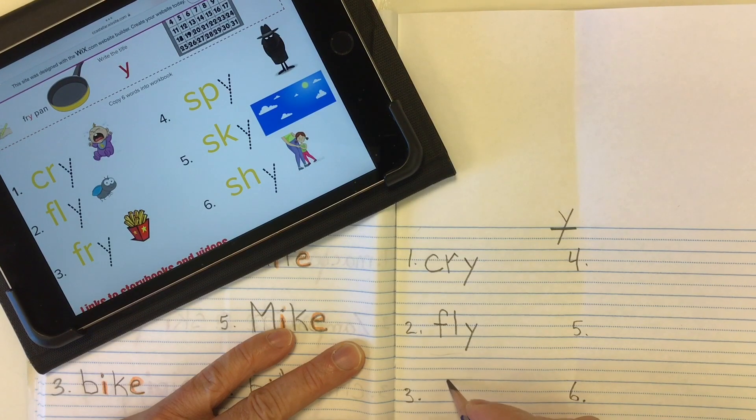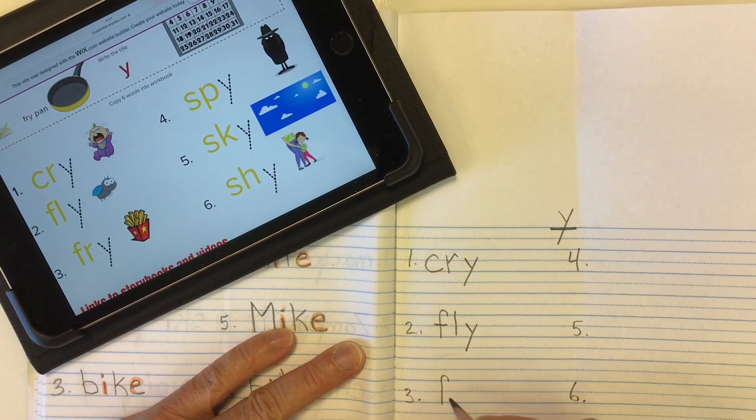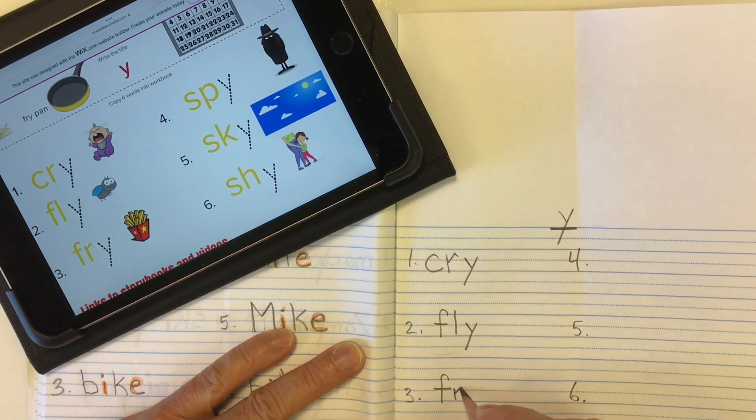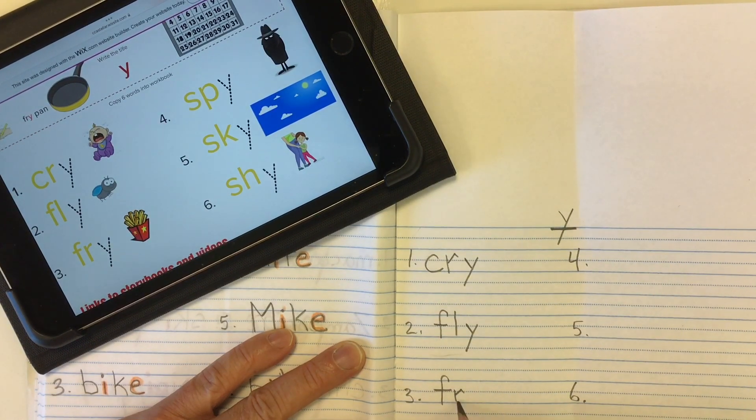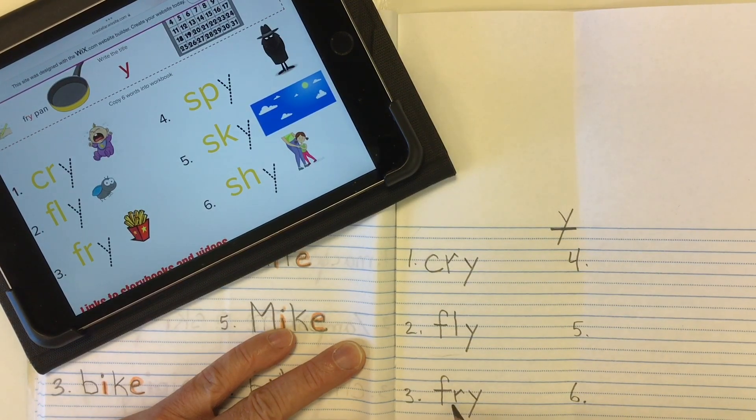Word number three is fry, like a fry pan, or to fry something in a pan, or a French fry. The fr comes from a consonant blend, fr, fr, I, the letter Y at the end again. Fr, I, fry, fry.